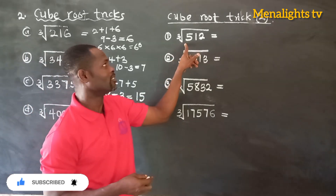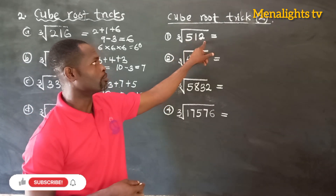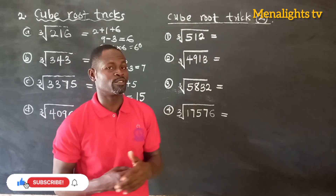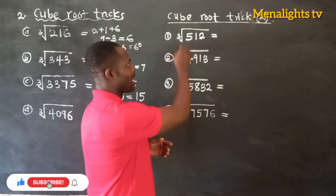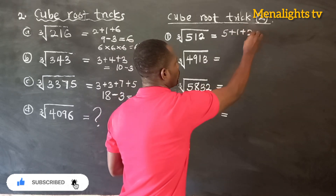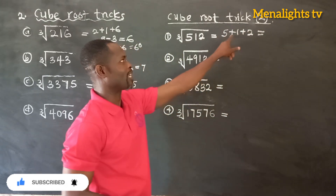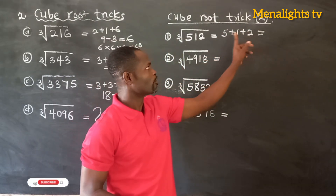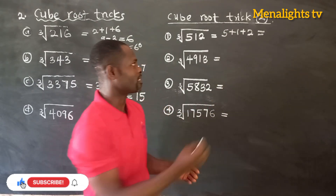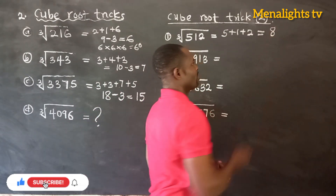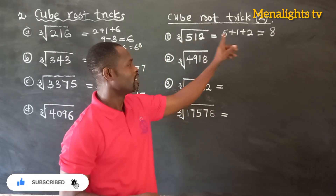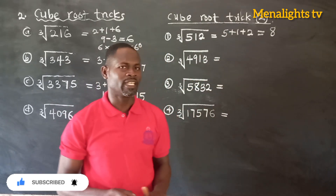So for the cube root of 512: we add the digits — 5 plus 1 plus 2. 5 plus 1 gives 6, and 6 plus 2 gives us 8. So 8 is our final answer, which means the cube root of 512 is equal to 8.